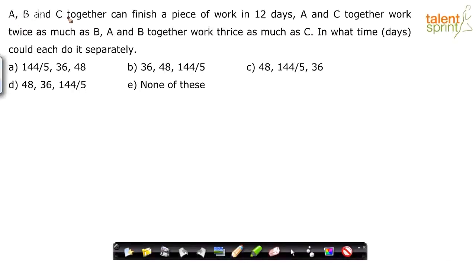The question says A, B and C together can finish a piece of work in 12 days. A and C together work twice as much as B. A and B together work thrice as much as C. In what time could each do it separately?